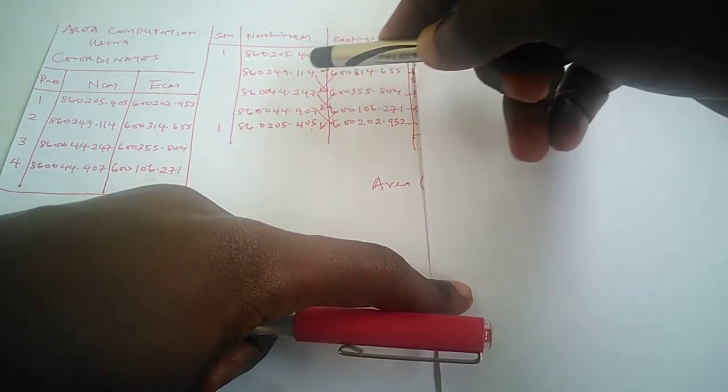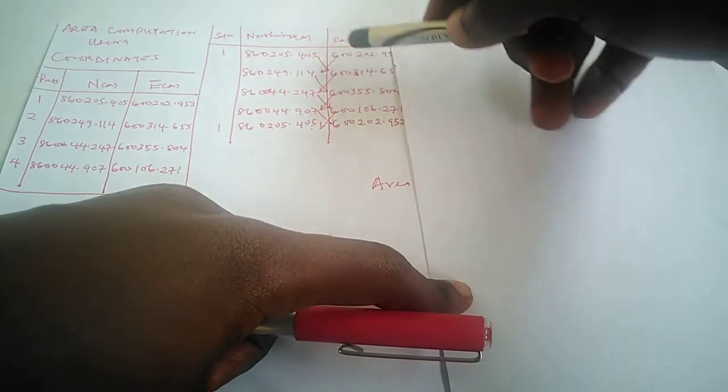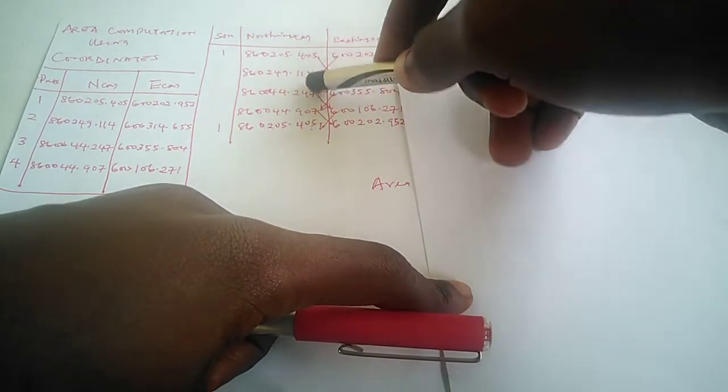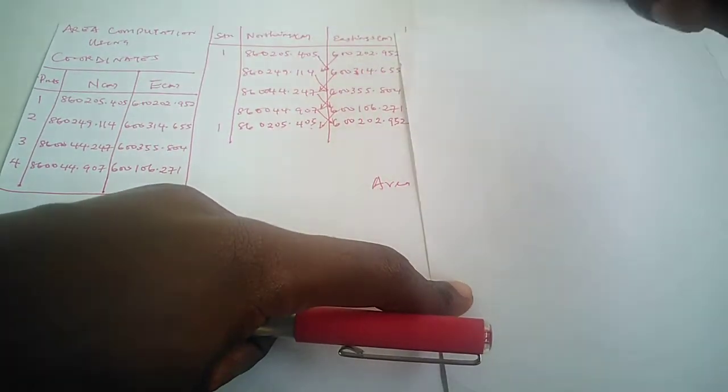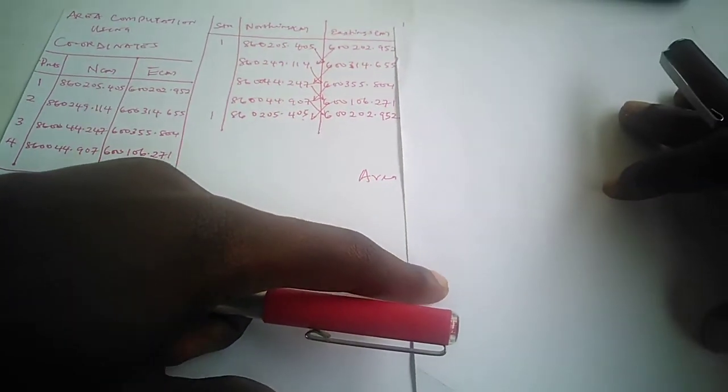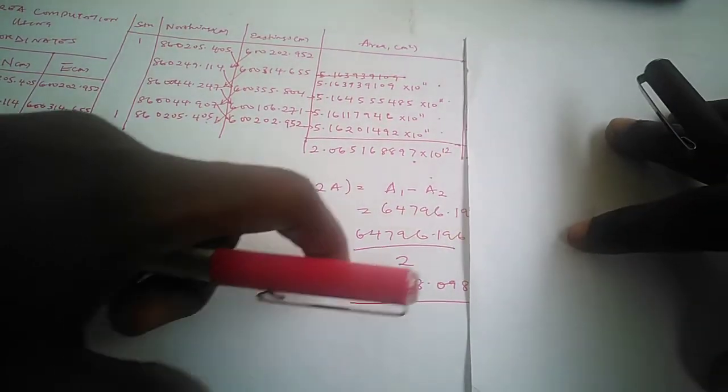Your second northing will multiply your third easting. When you come to this next line, your first easting will multiply your second northing, your second easting will multiply your third northing. By multiplying themselves like that, you find a cross—that's where the name cross coordinate comes by.